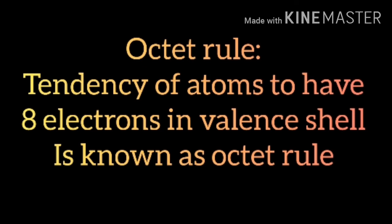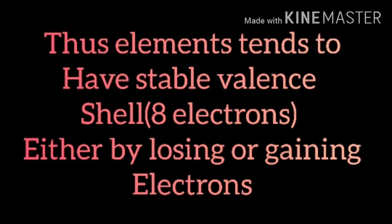Every atom tends to have eight electrons in its outermost shell — this is the rule of octet. 'Oct' means eight; you would hear about the octopus, which has eight arms. The octet rule reveals that every atom tends to have eight electrons in the valence shell. All atoms of an element except noble gases tend to have eight electrons in the outermost shell, forming a bond by gaining or losing an electron.